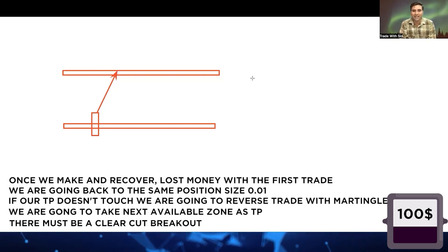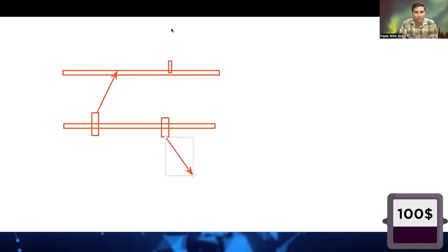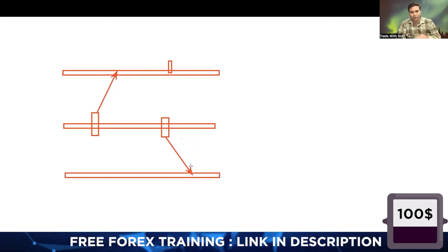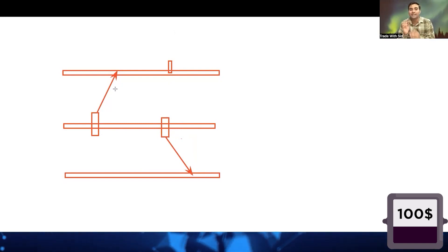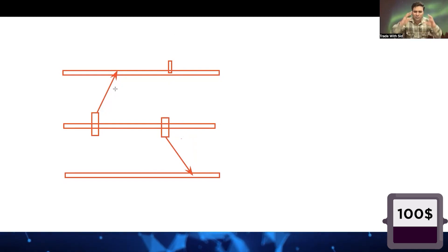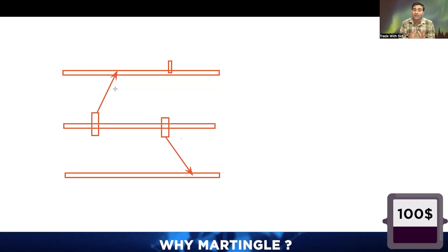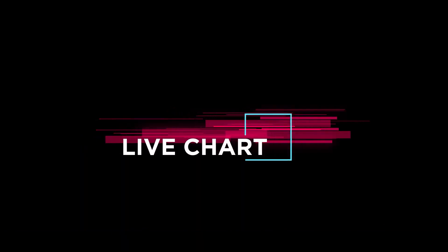Condition four: once we recover the lost money from the first trade, we go back to the same position size of 0.01. Similarly, once we see the breakdown of support, we take a sell entry and the next zone is our take profit. If the trade fails, we do only a one-step martingale or maximum two-step martingale. You can even stop using martingale — you'll still make money — but martingale will speed up and grow your account.